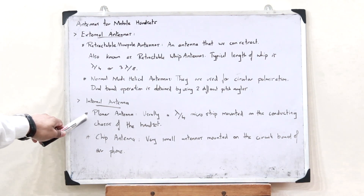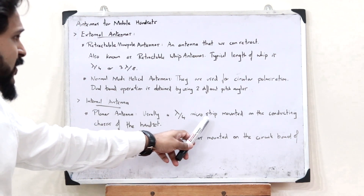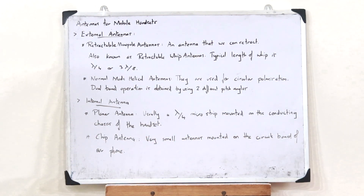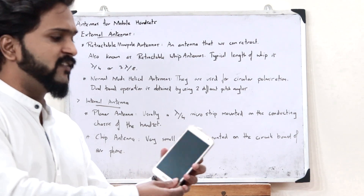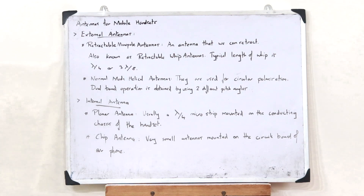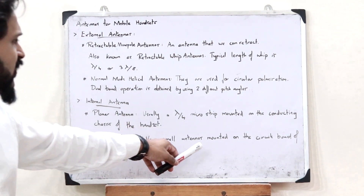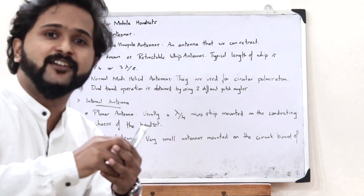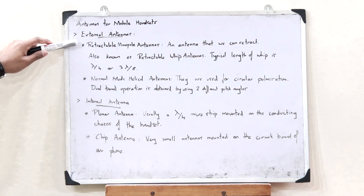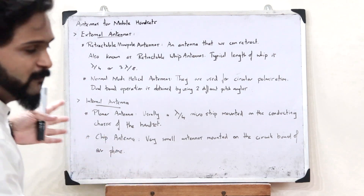For internal antennas, the first type is a planar antenna, which is usually a λ/4 microstrip mounted on the conducting chassis of the handset. Next is a chip antenna, which is a very small antenna mounted inside the circuit board of the phone. These are the different types of antennas used in mobile handsets.